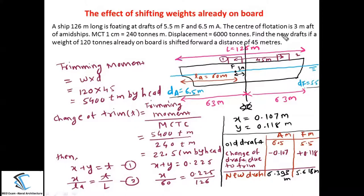Before starting the numerical, always draw the profile view of the ship and show everything given in the problem. I have drawn a profile view here. The length of the ship L is 126 metres; the aft draft DA is 6.5 metres and forward draft DF is 5.5 metres. The centre of flotation F is 3 metres aft of the midship. Midship is at 63 metres, so the centre of flotation is at 60 metres from aft. MCTC is 240 tonnes metre.